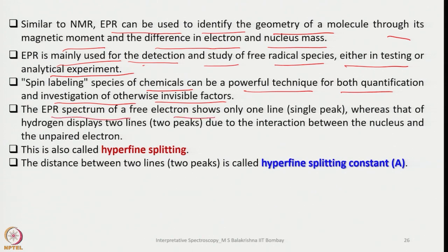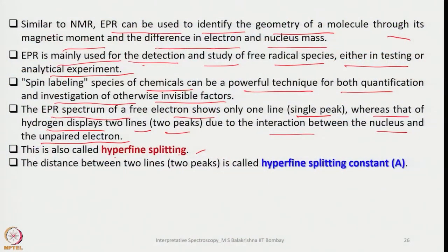The EPR spectrum of a free electron shows only one line — a single peak — whereas that of hydrogen displays two lines due to the interaction between the nucleus and the unpaired electron. This is called hyperfine splitting. Electrons with spin +½ and −½ can also interact with nuclear spin and the lines can be further split, which we call hyperfine splitting.